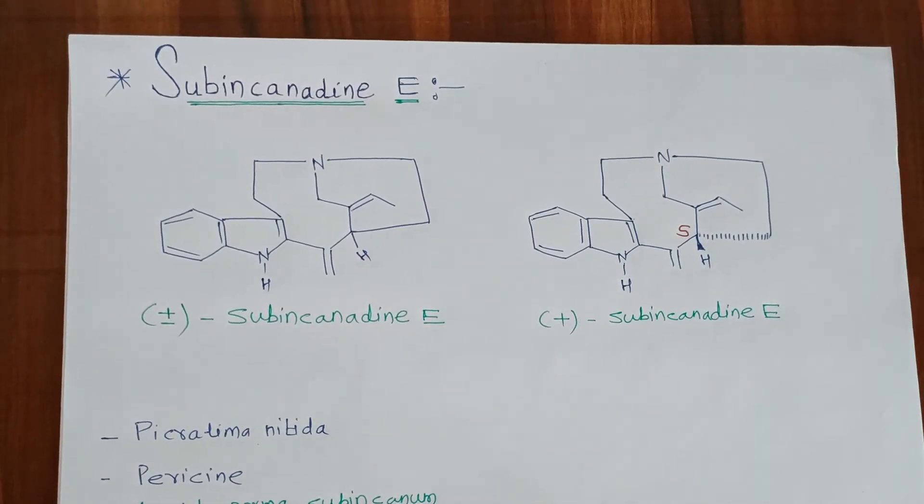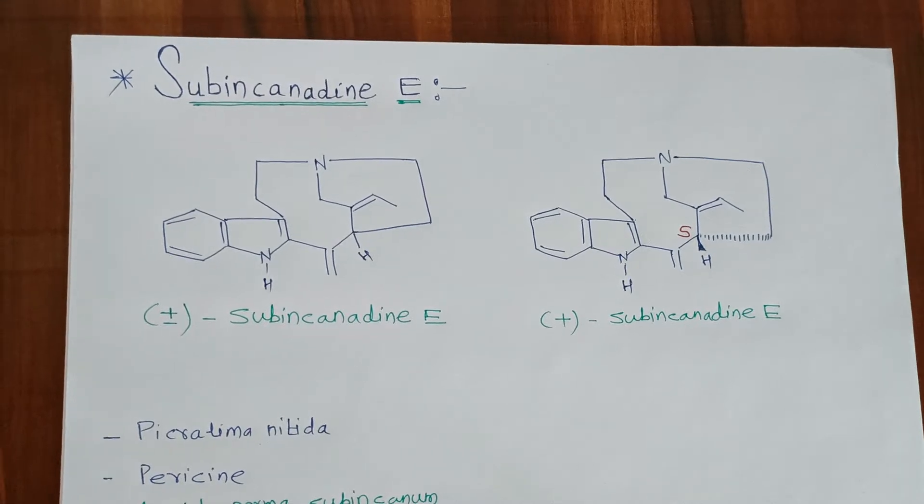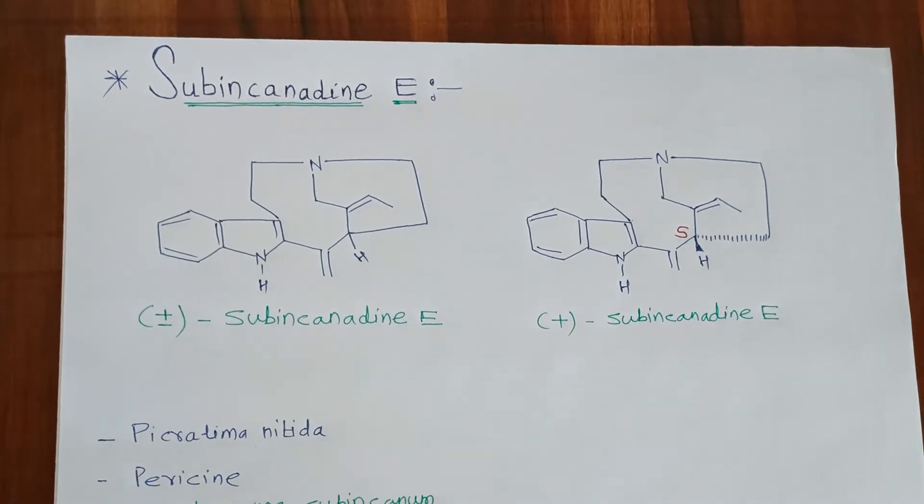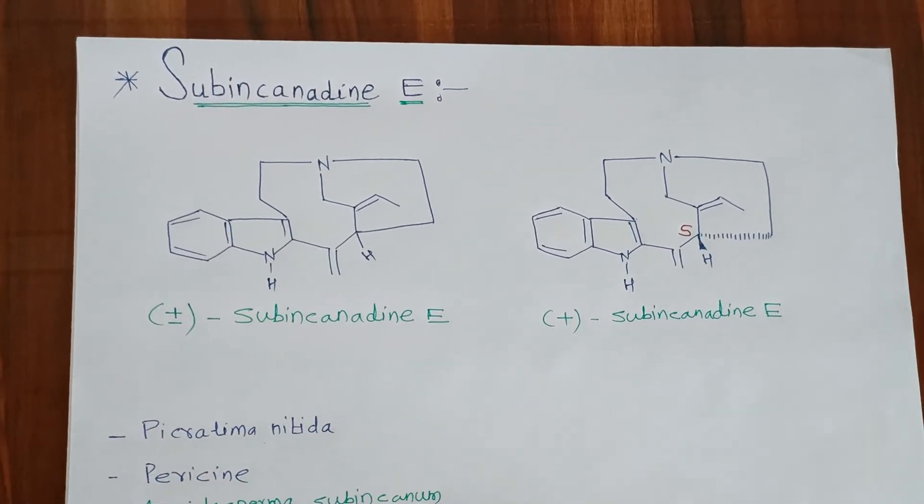In 2017, M.G. Calasetti and N.P. Argade reported the total synthesis of (±) and (+)-Subincanadine E in the Journal of Organic Chemistry.